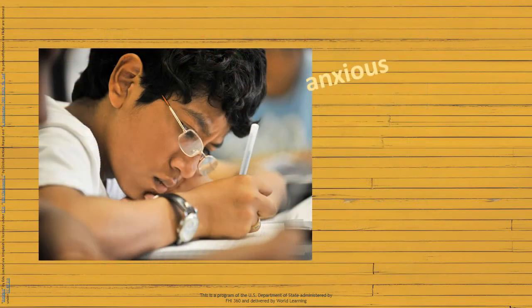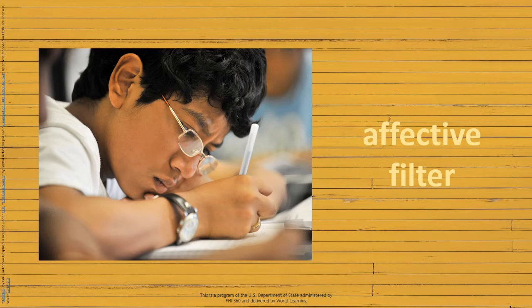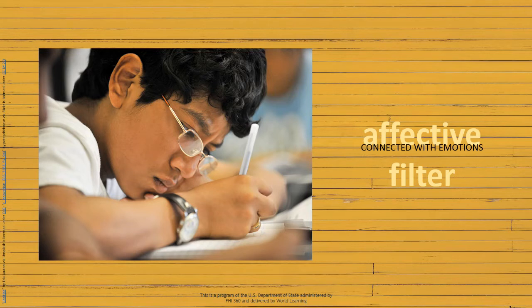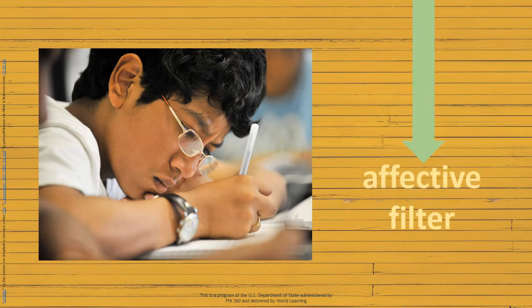Thus, they become anxious and exhibit different emotions that include discomfort. The lack of familiarity, anxiety, and discomfort results in a raised affective filter. Affective means connected with emotions, and the affective filter could be understood as a psychological barrier that increases or decreases based on a person's stress level and impacts a person's performance on tasks.